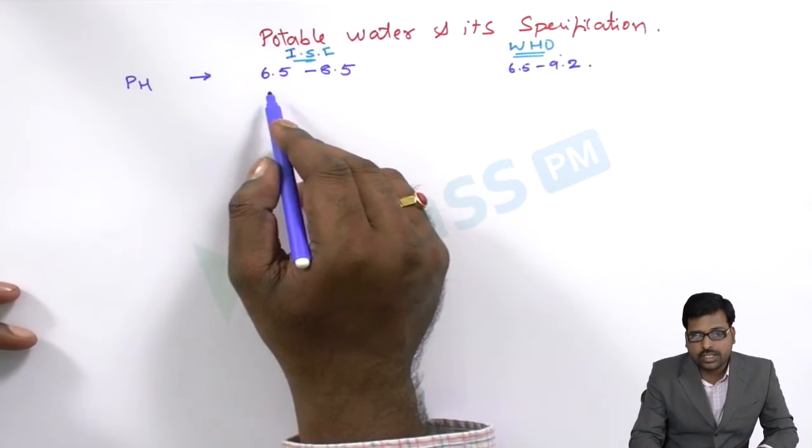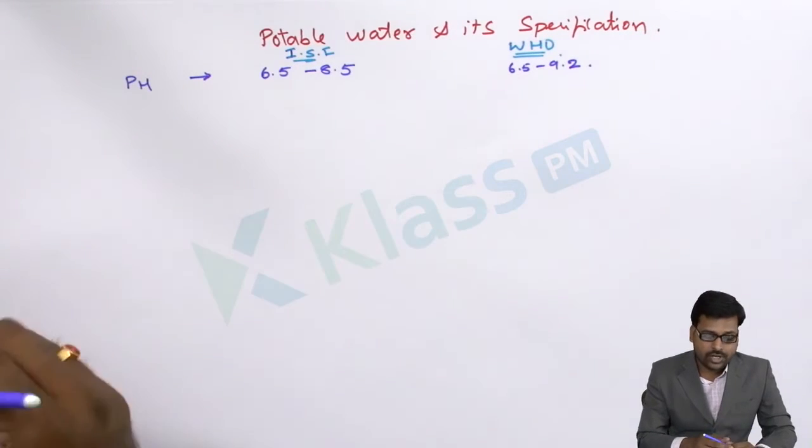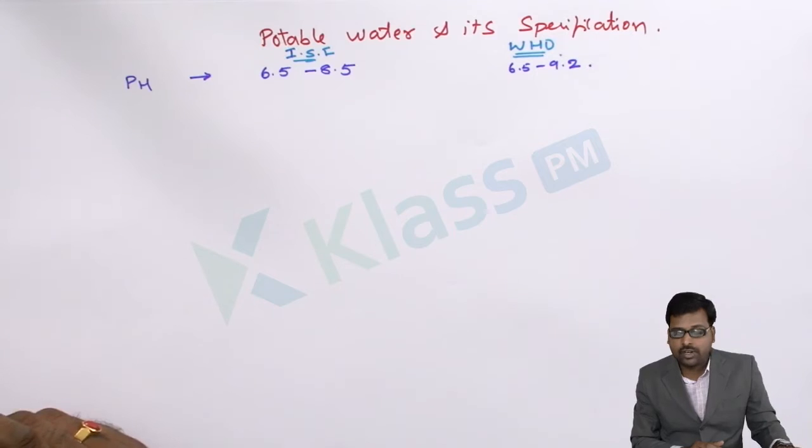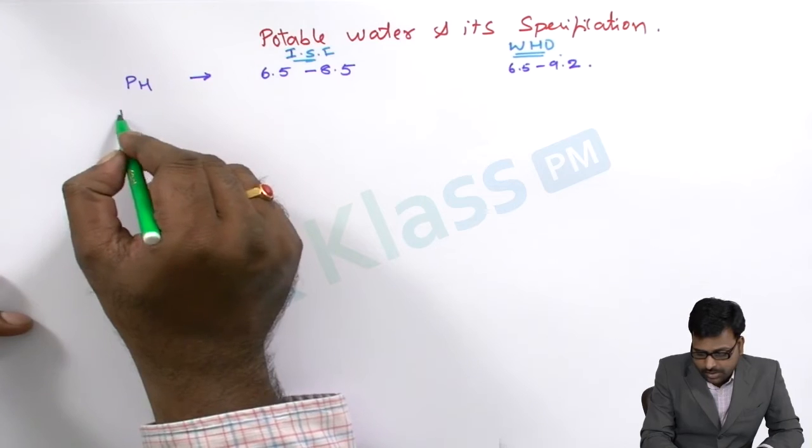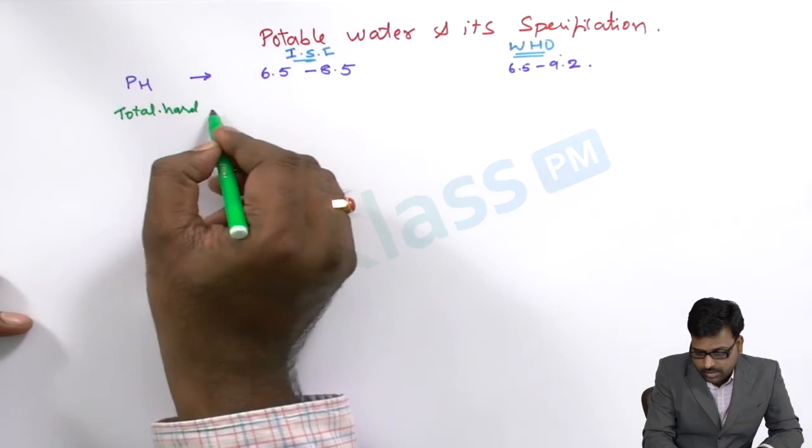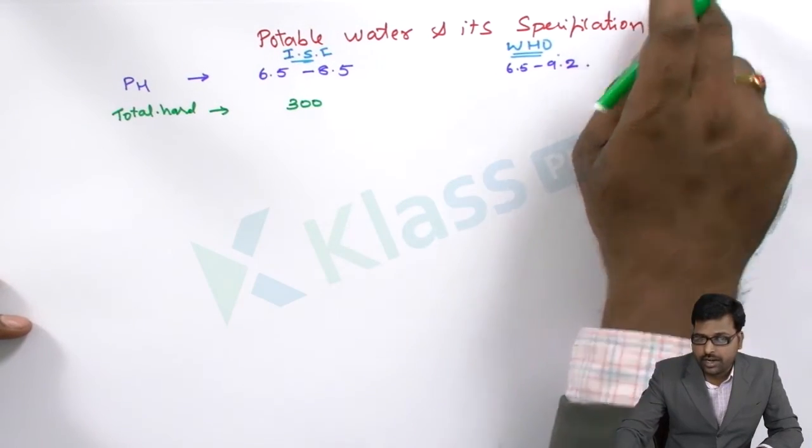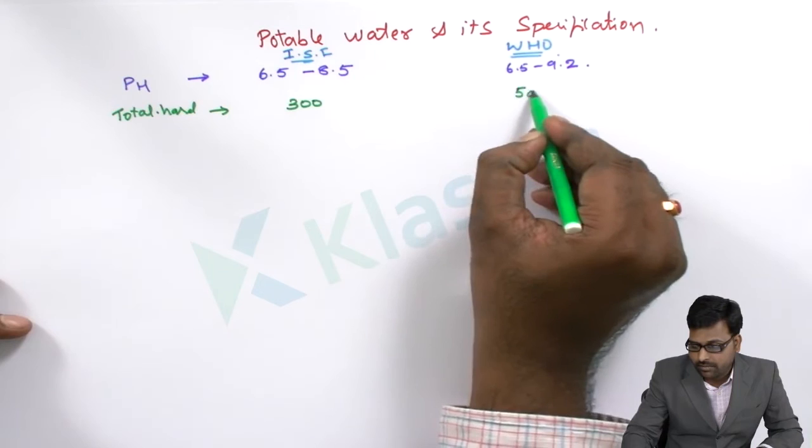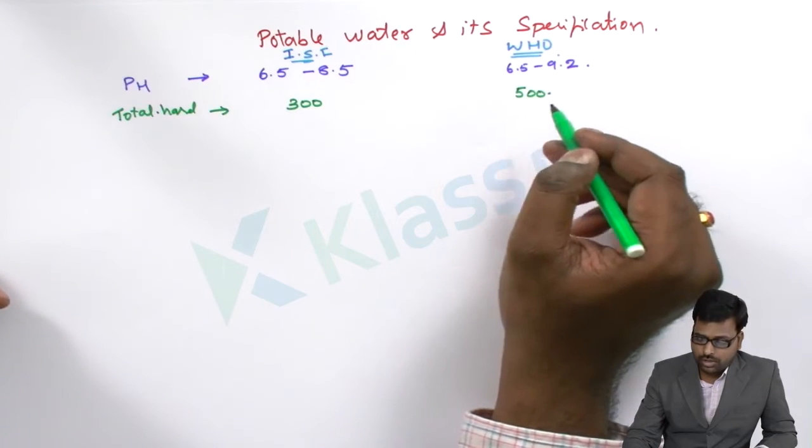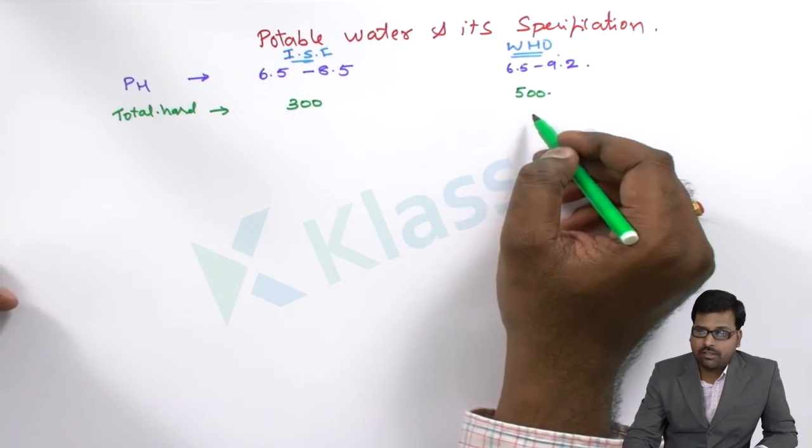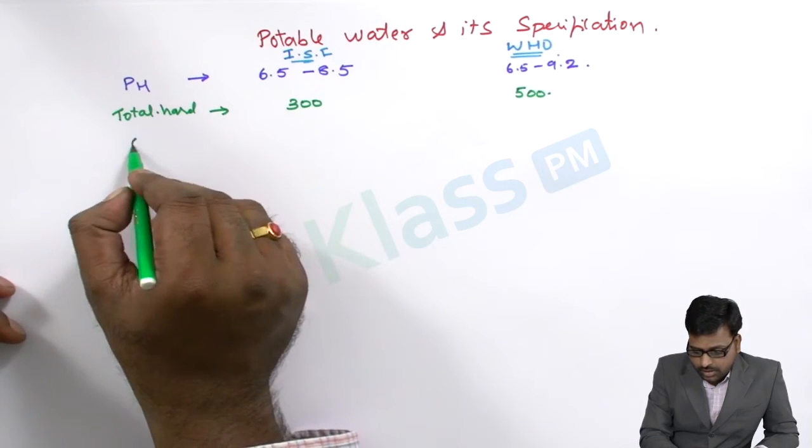In India we will follow 6.5 to 8.5 pH and if the pH is less than 6.5 or more than 8.5 that water cannot be potable. And also if you see the total hardness, in India standards it is 300 and in WHO standards it is 500. I say to you because of different natures of the people it may vary throughout the globe, that is the reason it is given as 500 in the WHO standards.